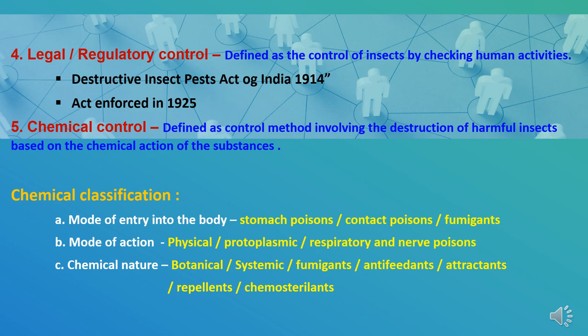The fifth method is chemical control, defined as control methods involving the destruction of harmful insect pests based on the chemical actions of substances. These chemicals are classified based on: mode of entry into the body — stomach poisons, contact poisons, and fumigants; mode of action — physical, protoplasmic, respiratory, and nerve poisons; and chemical nature — botanical, systemic, fumigants, antifeedants, attractants, repellents, and chemosterilants. Various chemicals are used according to their suitability.